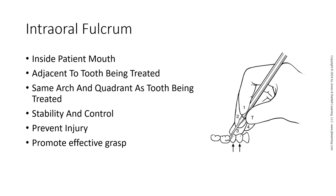The intraoral fulcrum is a finger rest inside the patient's mouth. It serves to provide stabilization of the hand during instrumentation. Fingers are grouped together. The ideal fulcrum is firm and stable, adjacent to the tooth being treated. It is on the same arch and quadrant as the tooth being treated, and it allows convenient access to the working area, easy instrumentation, adaptation, and stability. It also allows for control and prevents accidental finger injury and promotes effective grasp of the instrument.